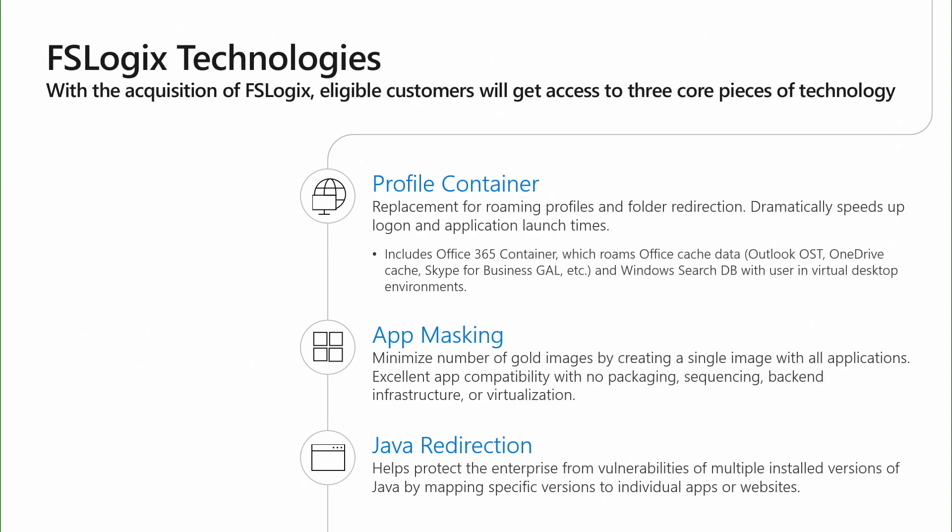So what does the suite look like? There have been numerous solutions throughout the industry to solve the problem of always getting your profile in non-persistent environments. The profile container technology simplifies that experience and allows you to use your applications like Office just as you do today. Application masking currently helps deal with manageability and maintainability of the number of images — sometimes upwards of a few thousand in large enterprises — and can help simplify how you're managing a complex set of apps for your users. And then Java redirection helps with different versions of Java you might need to maintain.